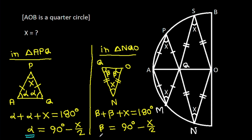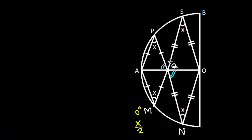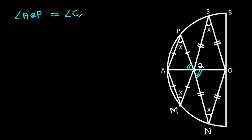So alpha is equal to beta. That means these two angles are equal. And angle AQP is equal to angle OQN. So PN will be a straight line. AQP will be a straight line.